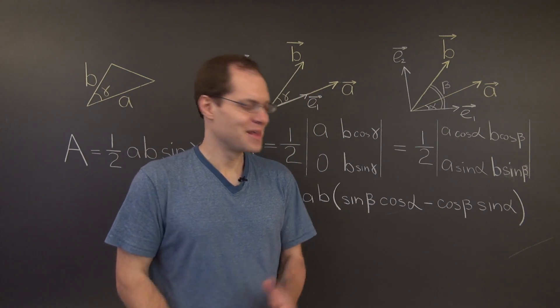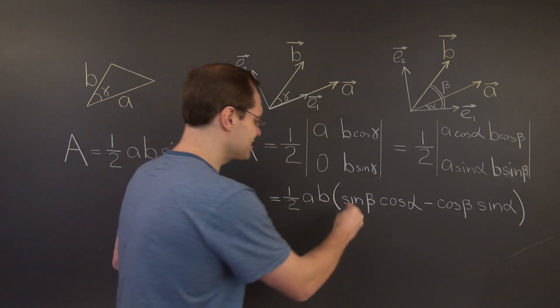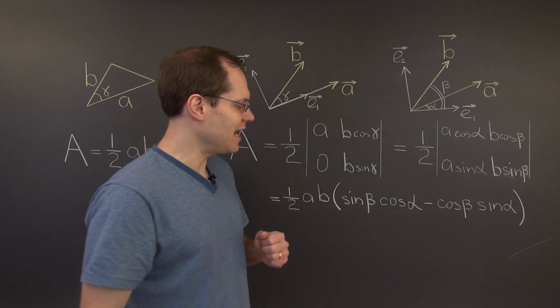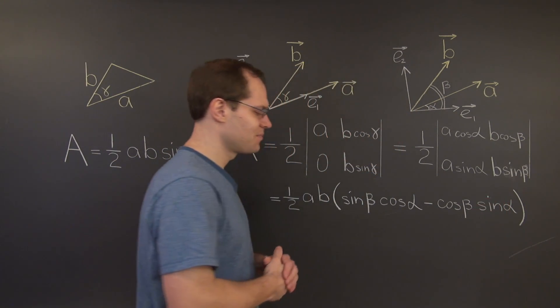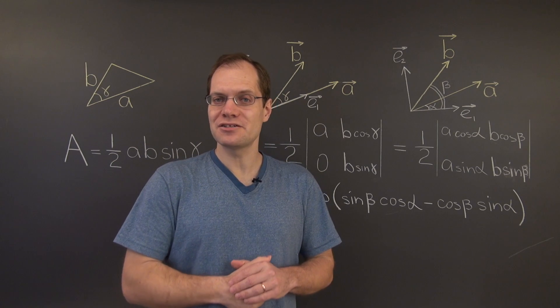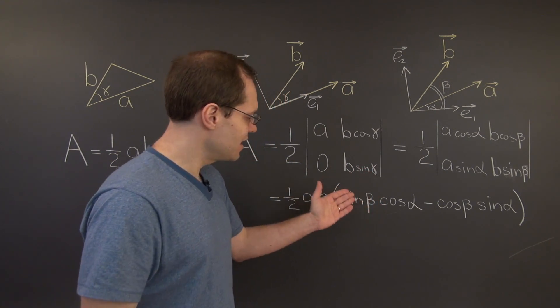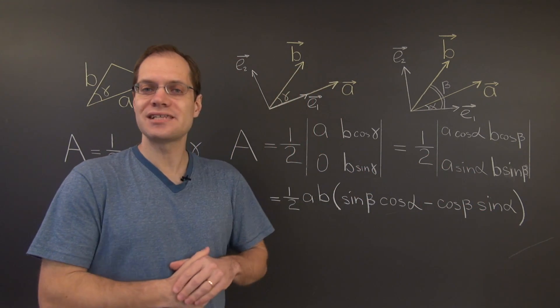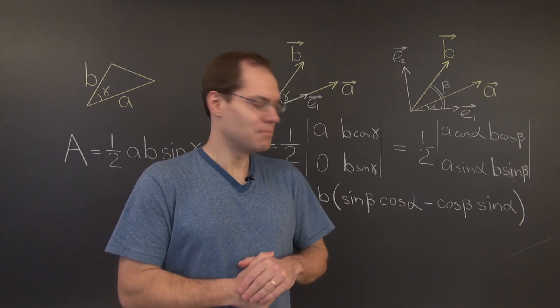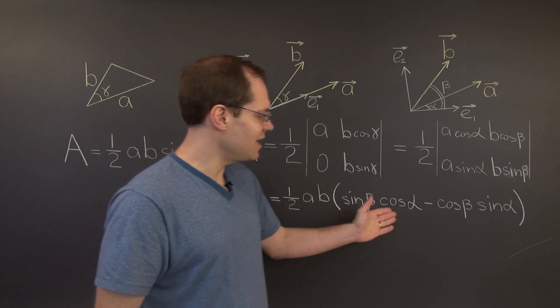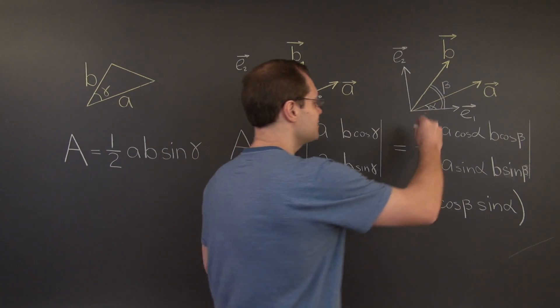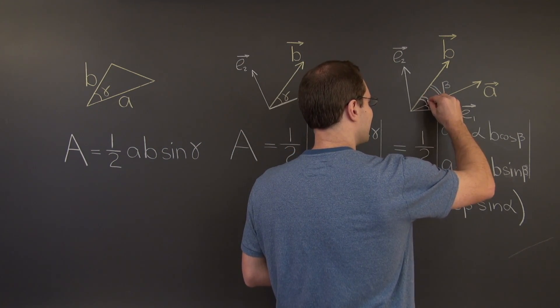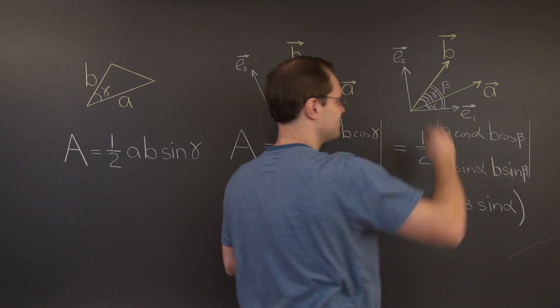And let's see what we're going to have left in the parentheses. In parentheses, we have sine beta cosine alpha minus cosine beta sine alpha. And of course, if you remember basic trigonometry, this expression equals sine of beta minus alpha.